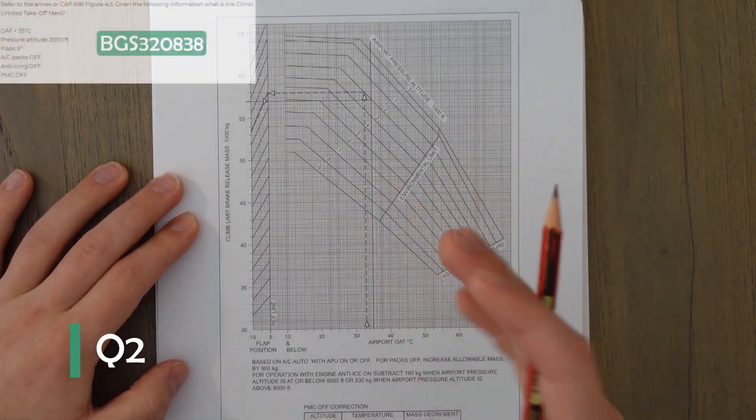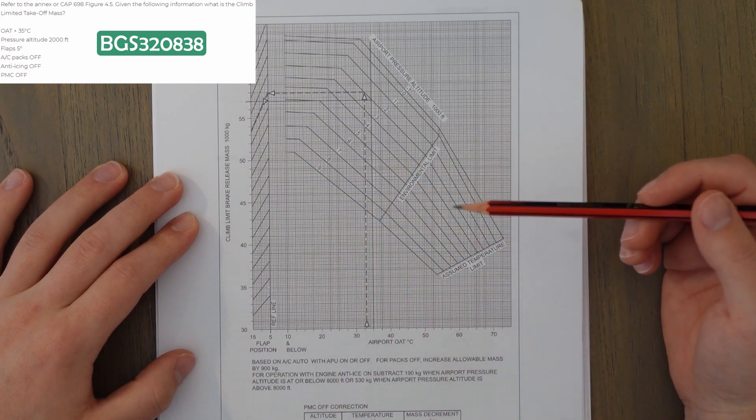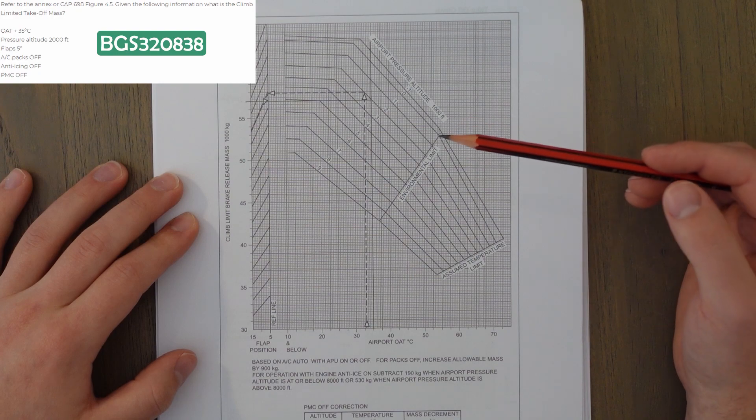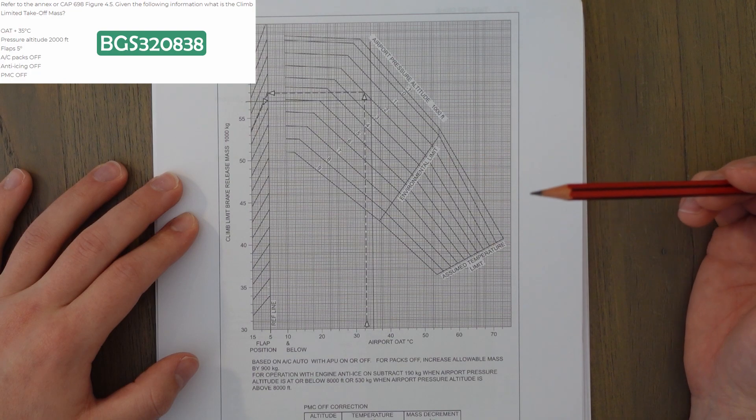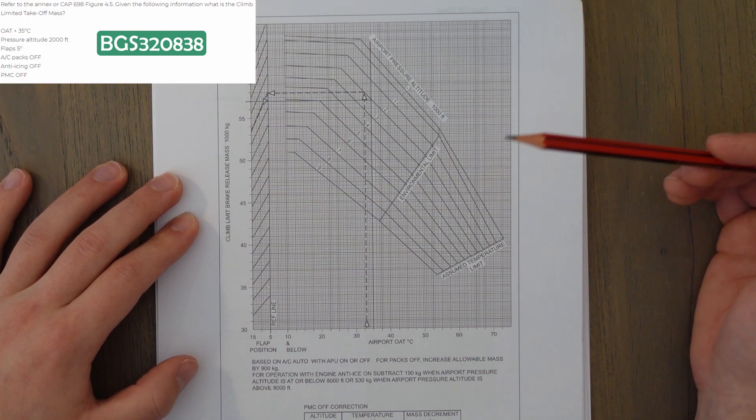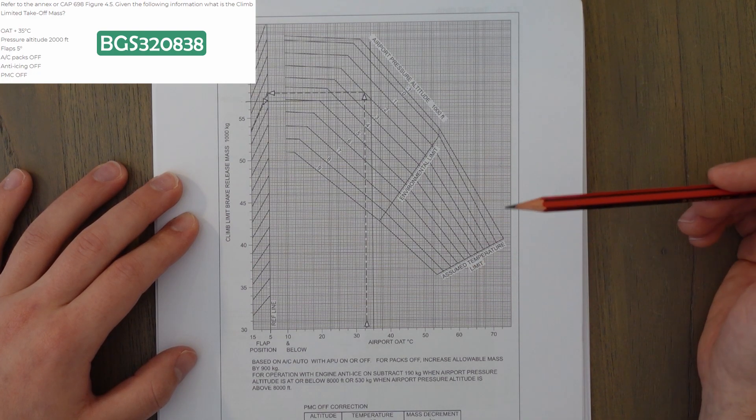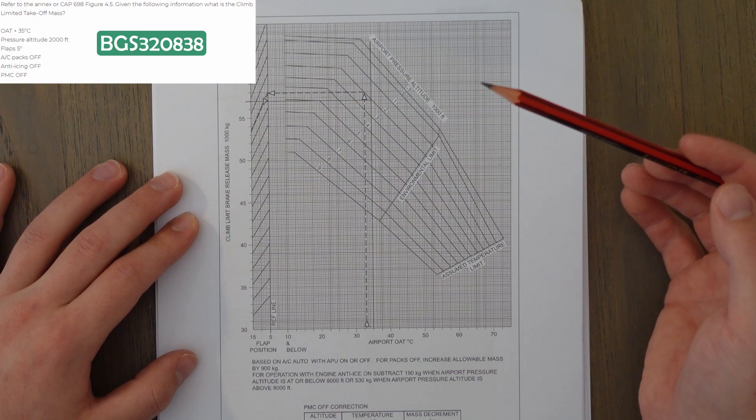So in this example, we are simply finding a climb-limited takeoff mass from the graph with the following information. We've got 35 degrees Celsius, 2,000 feet pressure altitude, flaps 5, air conditioning packs off, anti-ice off, and PMC off, whatever that is. I have no idea what PMC is. But if it's off, then it's off. We don't have to worry about it. So quite a straightforward question, I think, mainly because the graph doesn't look too complicated.